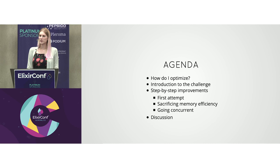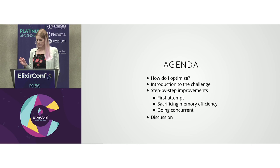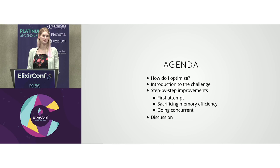So this is the agenda. First, I have to start with some caveats — if you're doing a talk about optimization, you have to say this is not always good, you have to think about a lot of this stuff. Then I'll give you an introduction to the challenge, the script we'll be working on. We'll be going in three different directions: first, preserving the original script but making small changes to make it faster; then using more memory to make it faster; and finally going concurrent, because this is Elixir.